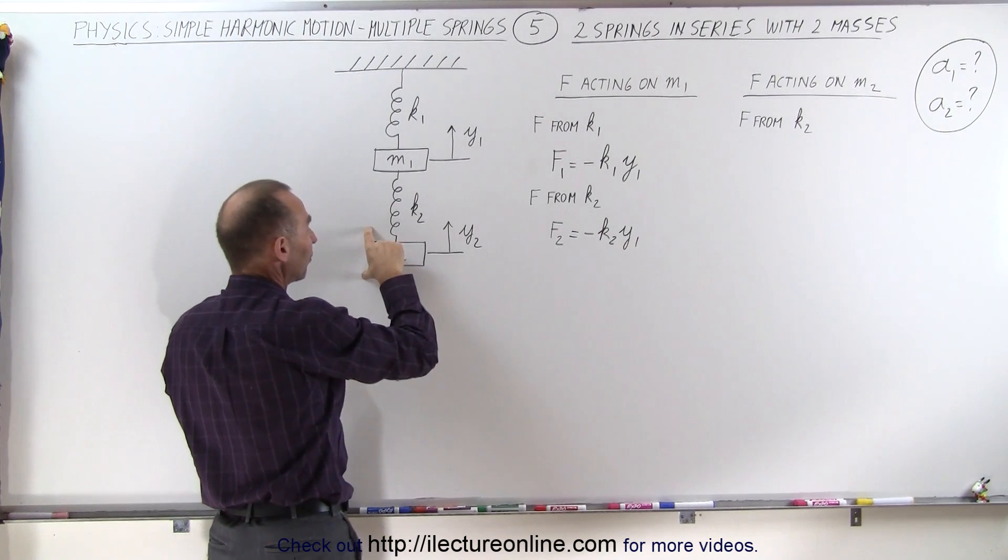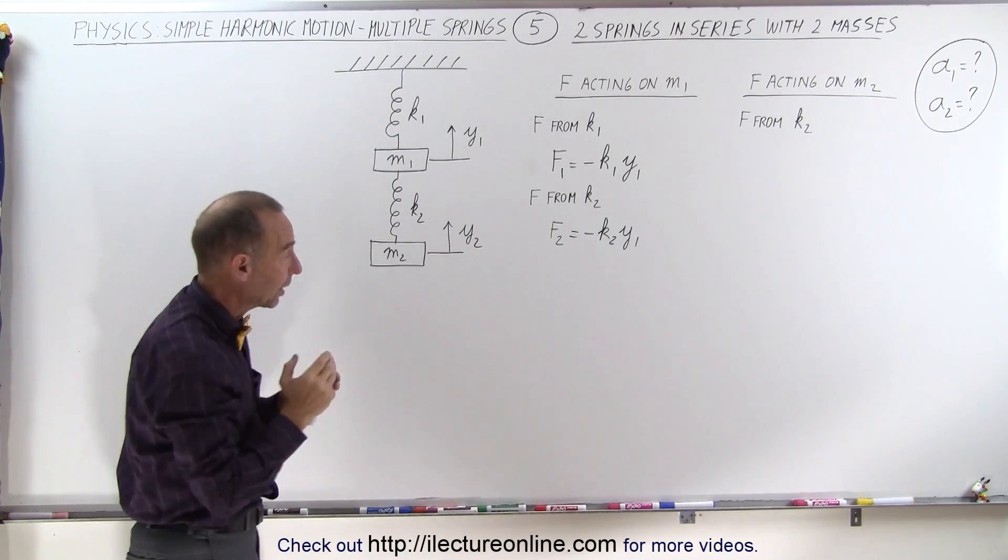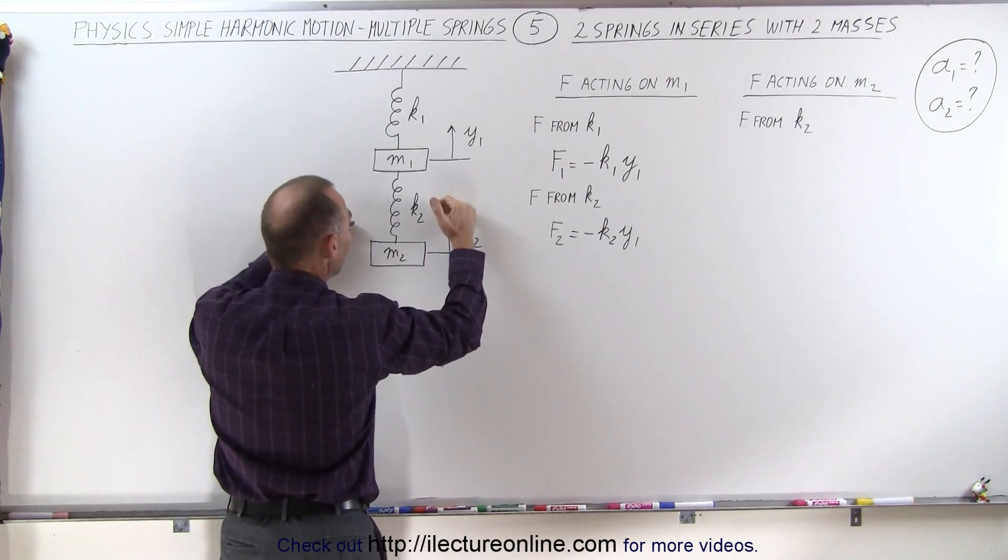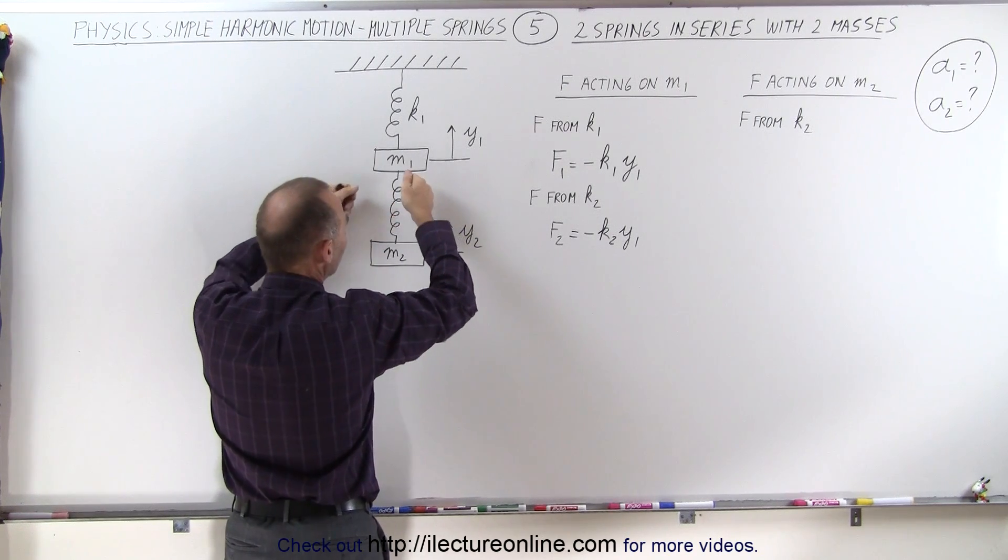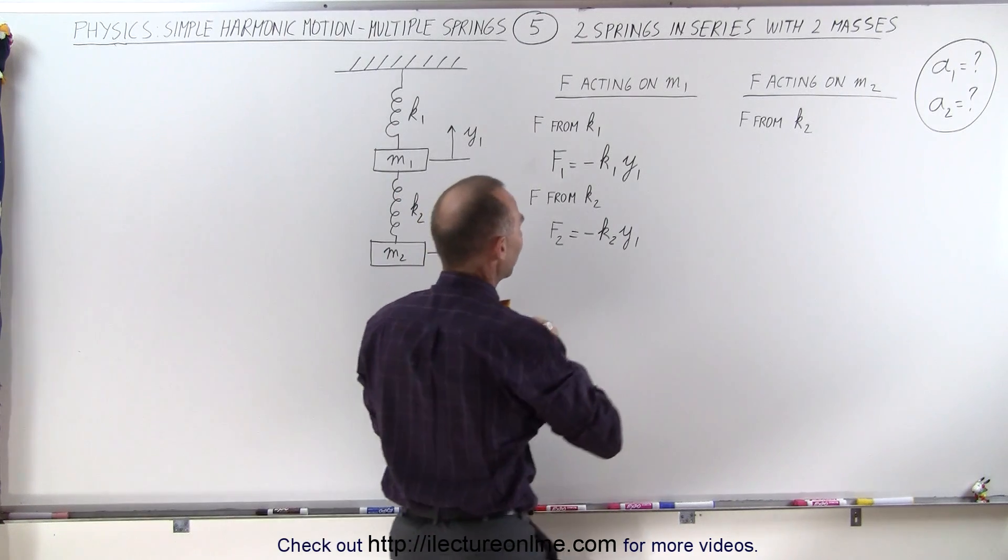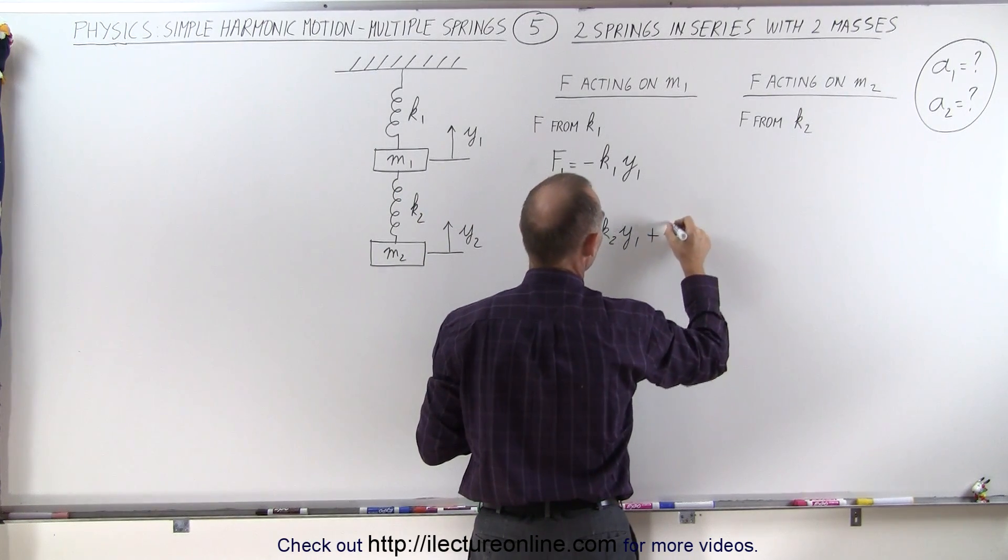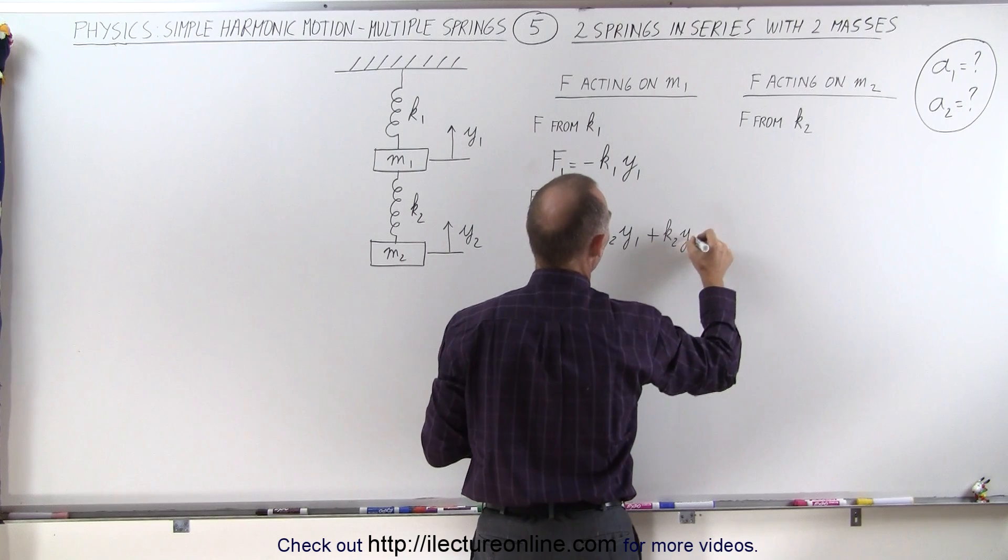However, it also depends upon what happens to mass 2. Now let's say that mass 2 goes up. If mass 2 goes up, that will shorten the spring, so the spring won't pull as much, which means that we now have to add to that plus k2 times y2.